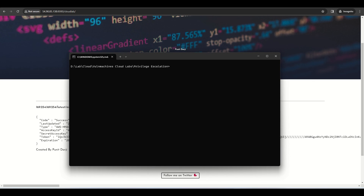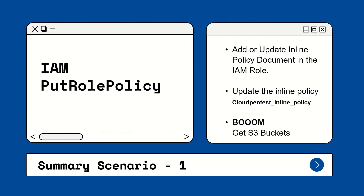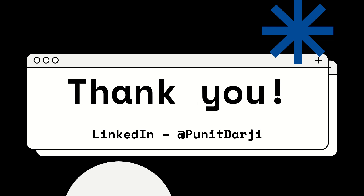This is all about privilege escalation with `iam:PutRolePolicy`. This API adds or updates an inline policy document embedded in the specified IAM role. In our scenario, the inline policy 'cloud-pen-test-inline-policy' was updated with Action `*` — administrator permission. Thank you for watching. If you liked this video, share it with your infosec friends, subscribe to the channel, and feel free to ask questions in the comments or reach me on LinkedIn at Punit Darji.